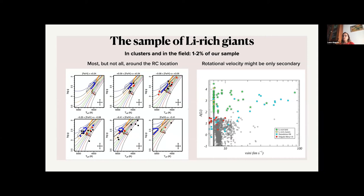And we have the Kiel diagram divided in metallicity bins and the location of the lithium rich stars. And you can see in brown and gray the location of the bump in different metallicity bins.